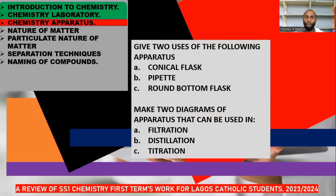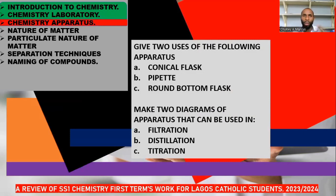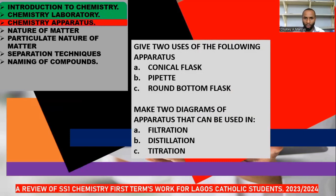Apparatus that can be used in filtration includes the conical flask — although, majorly, in the presence of a conical flask, a beaker shouldn't be used. So we have conical flask, beaker, Büchner funnel, and filter paper. For distillation, we can use a distillation flask, a Liebig condenser, a retort stand, tripod stand, wire gauze, and a Bunsen burner. These are the things we use during distillation processes.